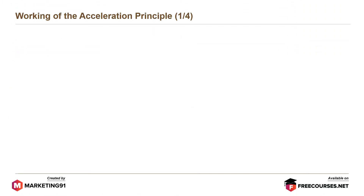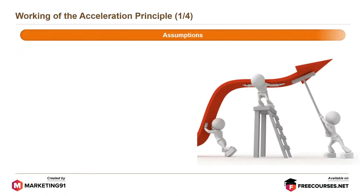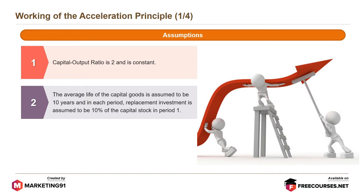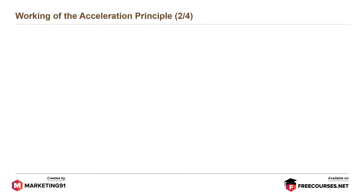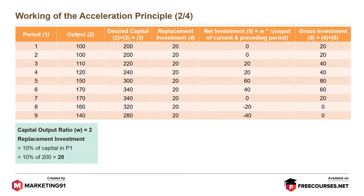Now let us understand the working of the acceleration principle. The assumptions are: the capital to output ratio is 2 and is constant; the average life of capital goods is assumed to be 10 years; and in each period, replacement investment is assumed to be 10% of the capital stock in period 1, i.e. 10% of 200 which equals 20.